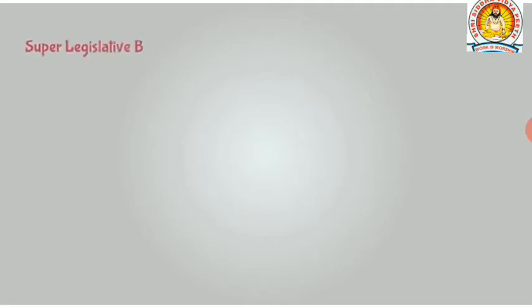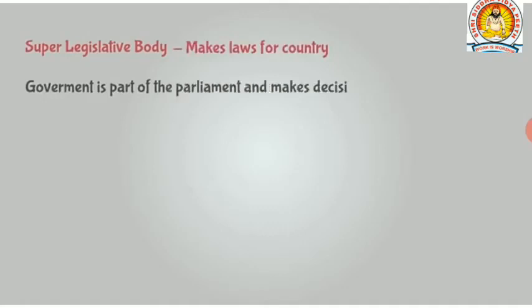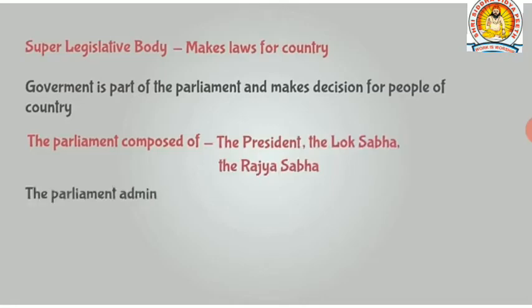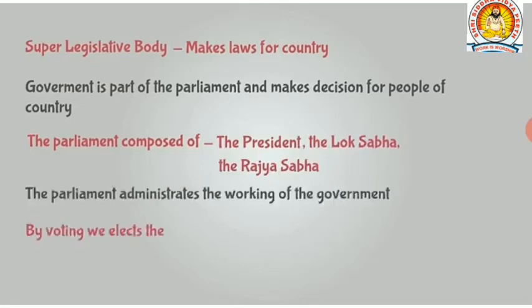So what did we learn about the parliament? The parliament is a supreme legislative body which makes laws for our country. The government is a part of the parliament and makes decisions for the people. The parliament is composed of the President, the Lok Sabha, and the Rajya Sabha. Through voting, we elect the members of the parliament directly or indirectly.